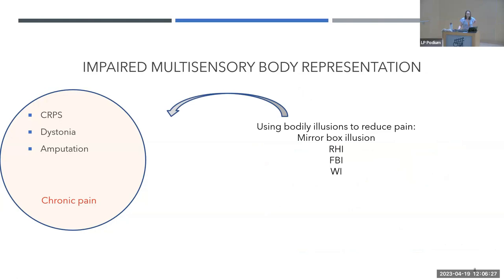There is also evidence that some procedures called bodily illusions are able to reduce pain. The way these illusions work is by manipulating multiple sensory inputs in a way that tricks our brain — and thereby our pain. These illusions include the mirror box illusion, mainly used with amputees, the rubber hand illusion, the football illusion, and the walking illusion. They all share the manipulation of multiple sensory inputs.